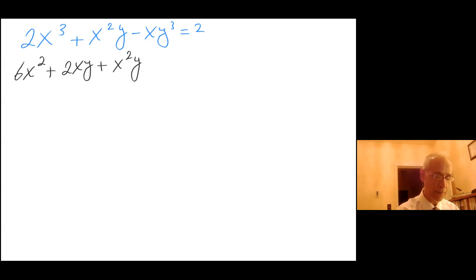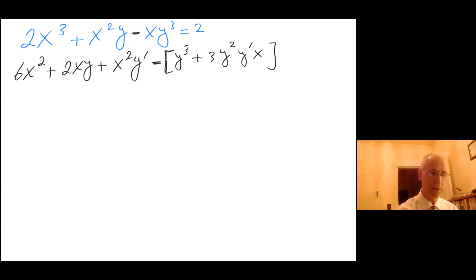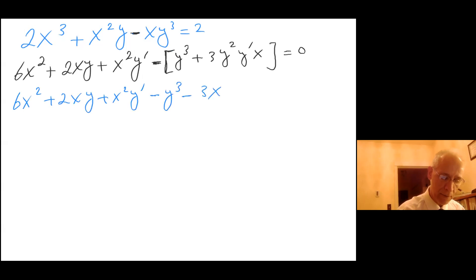So I get x squared y prime, minus — opening the bracket and keeping the minus out — the derivative of x times y cubed is y cubed, plus 3y squared y prime times x, all equals 0. Expanding: 6x squared plus 2xy plus x squared y prime minus y cube minus 3xy squared y prime equals 0.